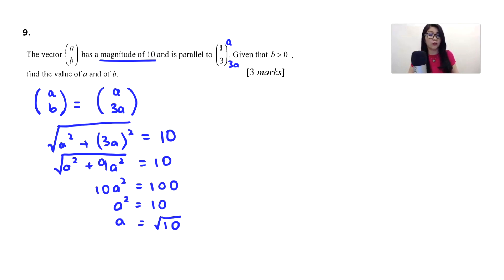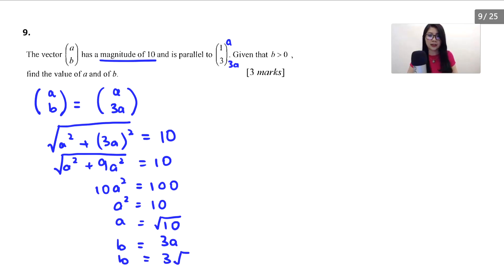Now we find the value of b. We know b is 3a, so b equals 3 times root 10, which is 3 root 10. That is the answer.